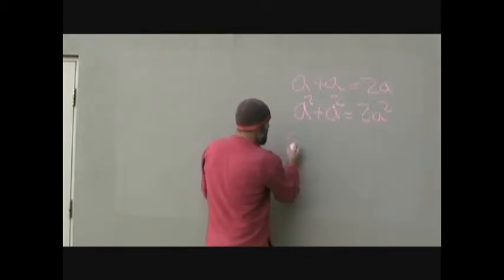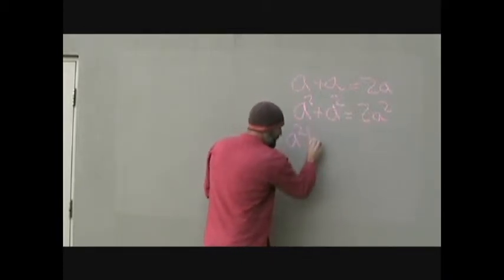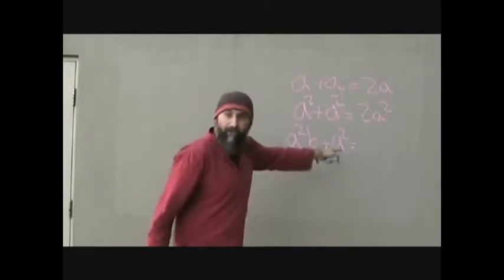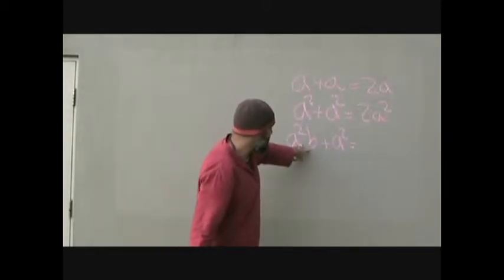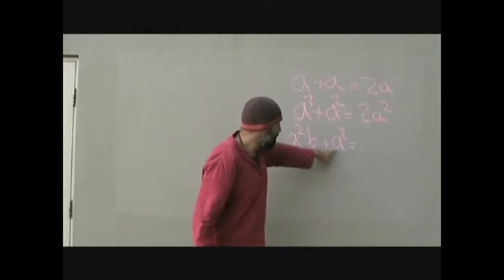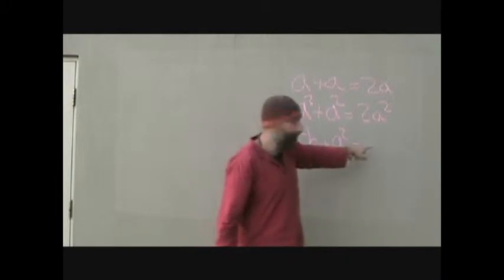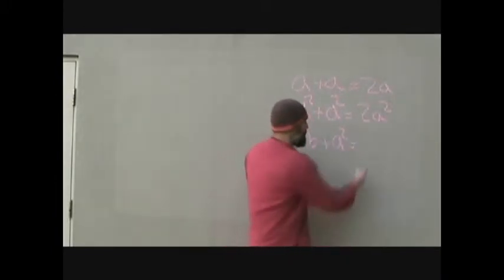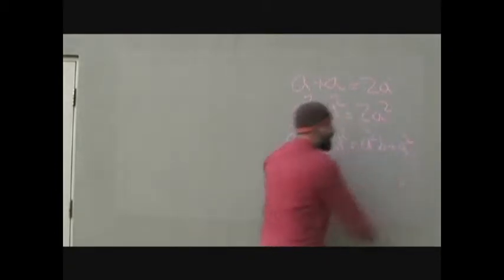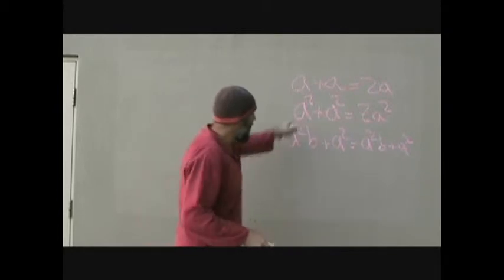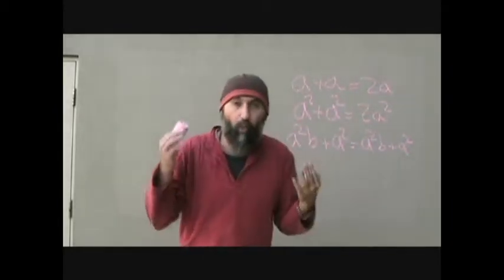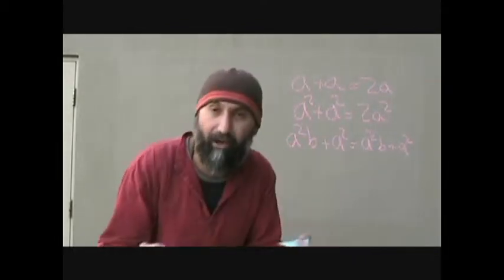If you had something like a squared times b plus a squared, you couldn't simplify because the multiplication makes those two things different — that supersedes the addition. So the answer would just be a squared b plus a squared. It doesn't reduce anymore. When you're adding or subtracting, the terms have to be completely identical.